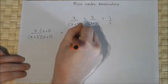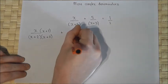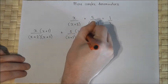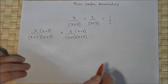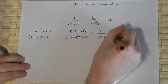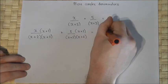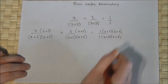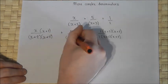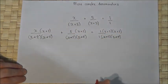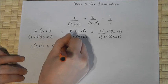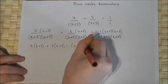The second fraction already has an (x+3), so I force the (x+2) in — what I do to the bottom I must do to the top. I do the same with the 1 over 1, multiplying by (x+2) and (x+3) top and bottom. Now all fractions share the same denominator, so I can cancel them all off, leaving: x(x+3) plus 5(x+2) equals 1 lot of (x+2)(x+3).